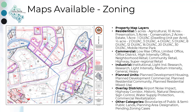Zoning maps display all the property map layers, plus residential, commercial, and industrial zones, planned units, overlay districts, and other categories such as boundaries of public or semi-public land. The location and boundaries of the zoning districts are established by the County Zoning Ordinance. The map collection dates back to 1976.